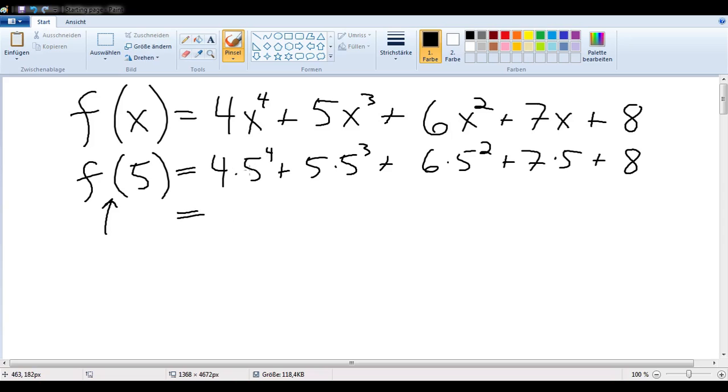Okay, so 4 times 5 to the fourth: 5 squared is 25, so 5 to the fourth would be 25 squared, so 625, so 4 times 625 plus 5, well actually this just turns out to be 5 to the fourth, right? So that's again 625, plus 6 times 5 squared, so 6 times 25 is 150, plus 35, plus 8. Now if we multiply that out...